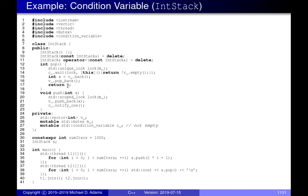On the question of rechecking the condition: the two-argument form of wait that we're using — where the second argument is a condition predicate — effectively has a while loop baked in. It's saying: while this condition is not true, keep waiting. So the rechecking is inherent to this particular overload of wait.